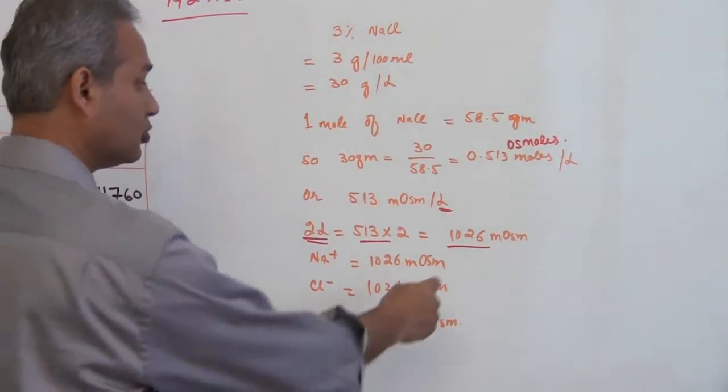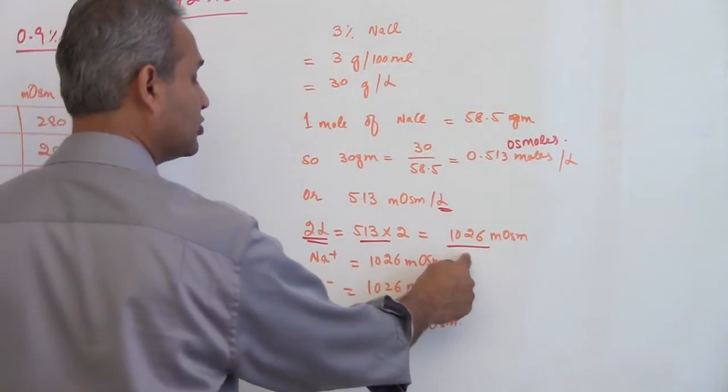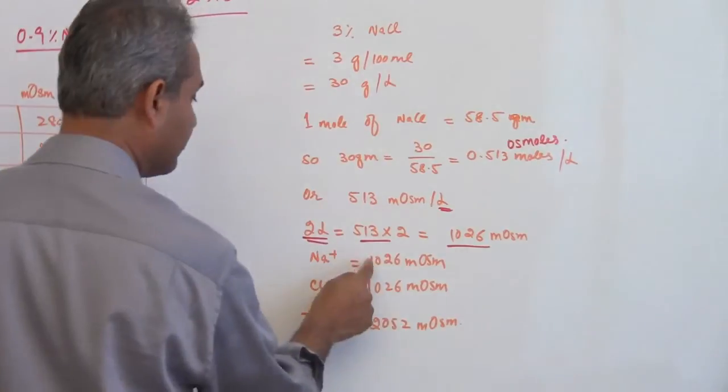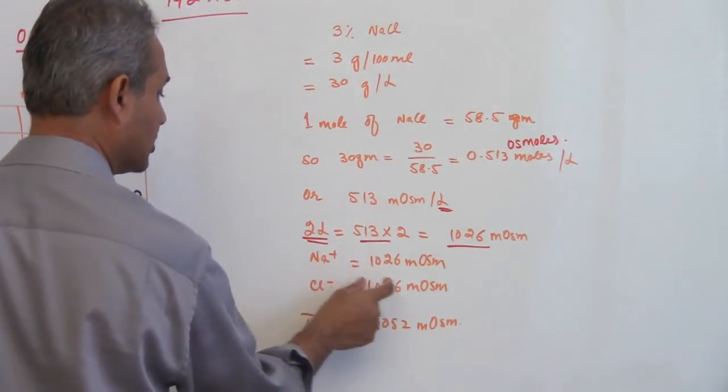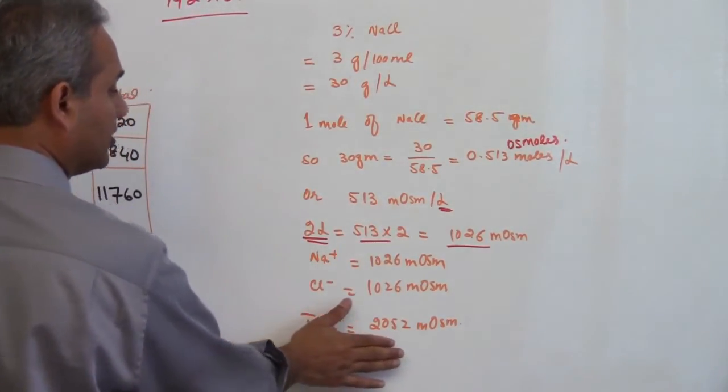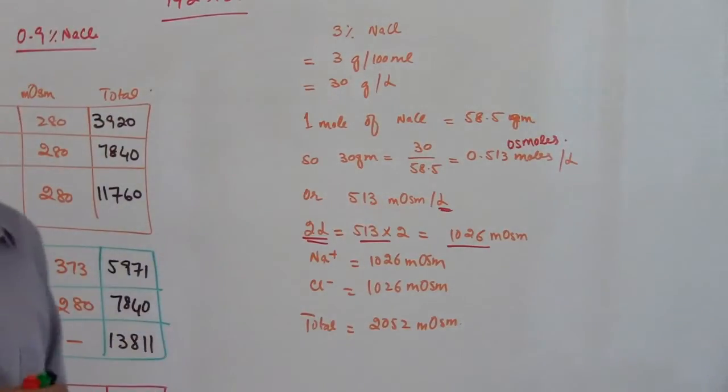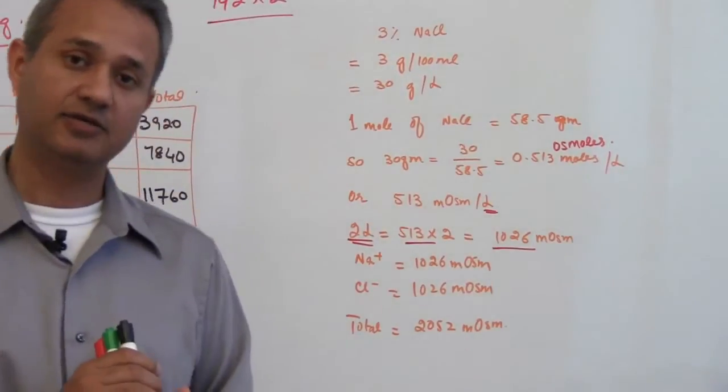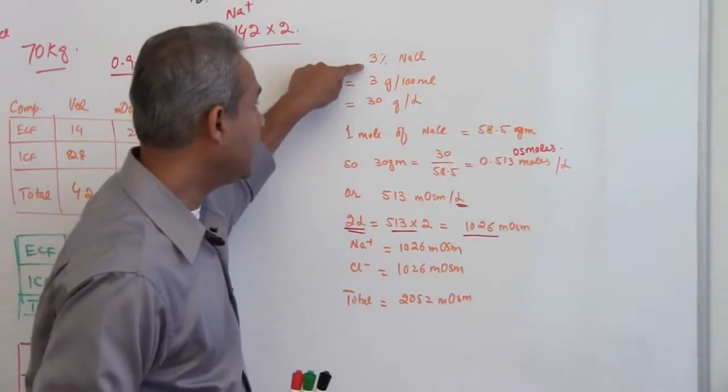If the total milliosmoles were 1026, we would now have 1026 for sodium and 1026 for chloride, so total will become 2052 milliosmoles.